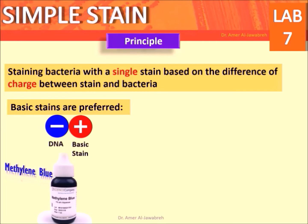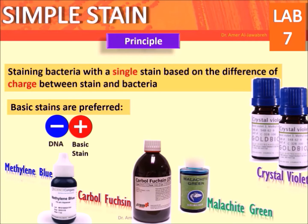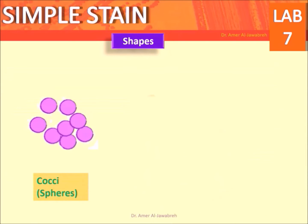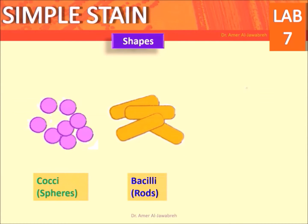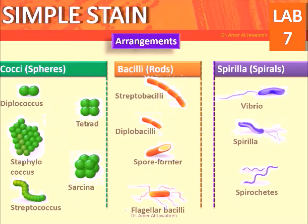Basic stains are positively charged; bacteria are negatively charged — both bind strongly. Basic stains include methylene blue, carbol fuchsin, crystal violet, malachite green, and safranine. Bacterial shapes: cocci or spheres, bacilli or rods, and spirella or spirals.